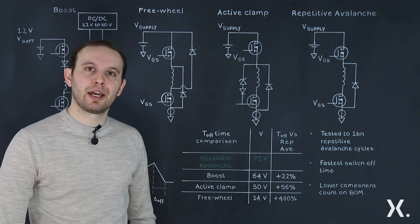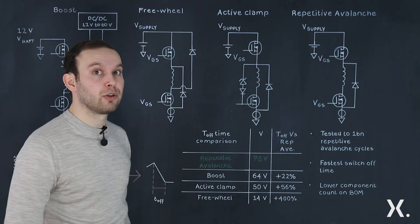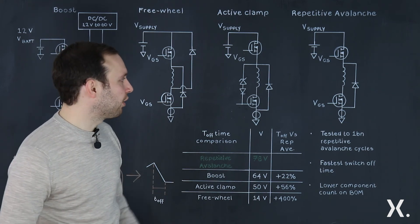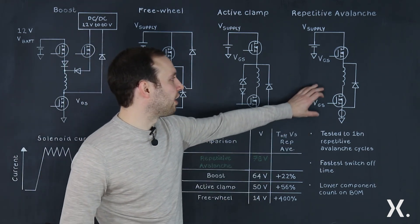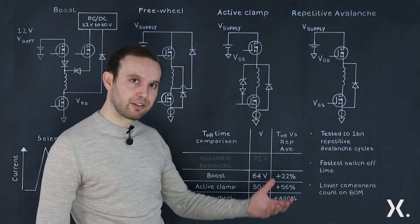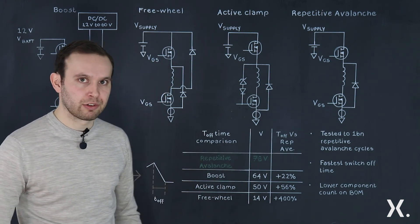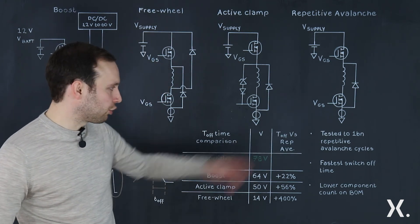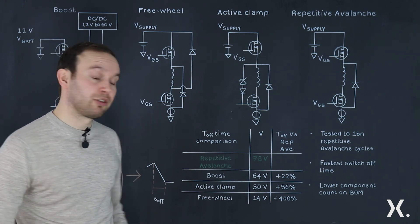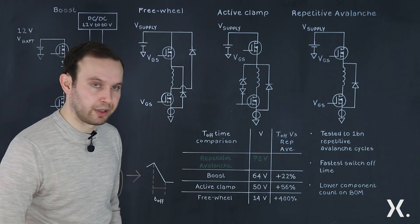Nexperia has an application-specific repetitive avalanche MOSFET portfolio to address this circuit. Key considerations: first, the avalanche phenomenon is inherent in the design of this circuit, and Nexperia has tested these products to a billion repetitive avalanche cycles. Additionally, this design offers the fastest switch-off time and the lowest component count on the bill of materials.